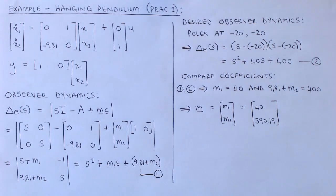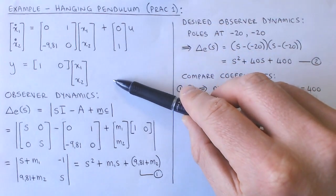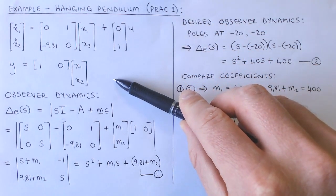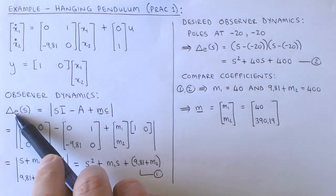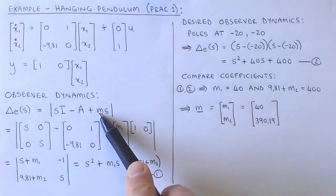We use the same hanging pendulum model as previously with the state variable model of the plant given by these equations. We can now describe the observer dynamics by calculating the observer characteristic polynomial in terms of the observer gain M.